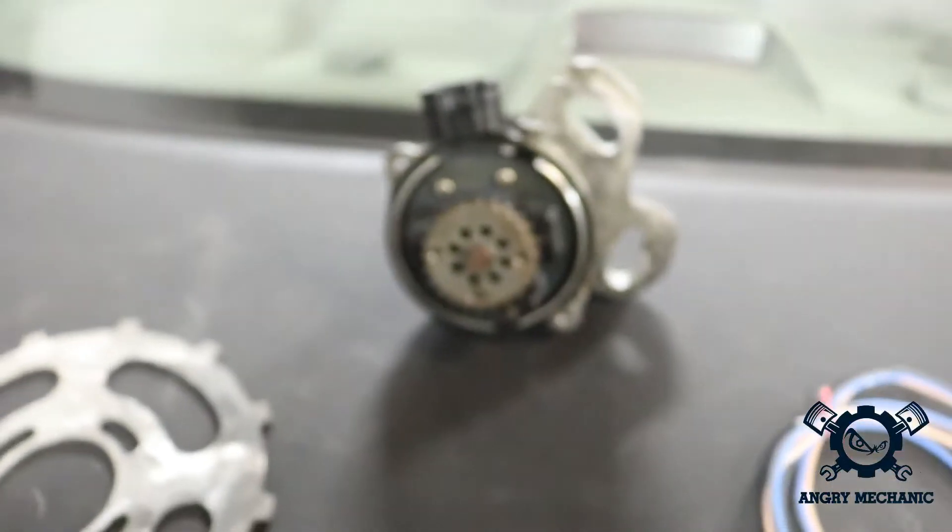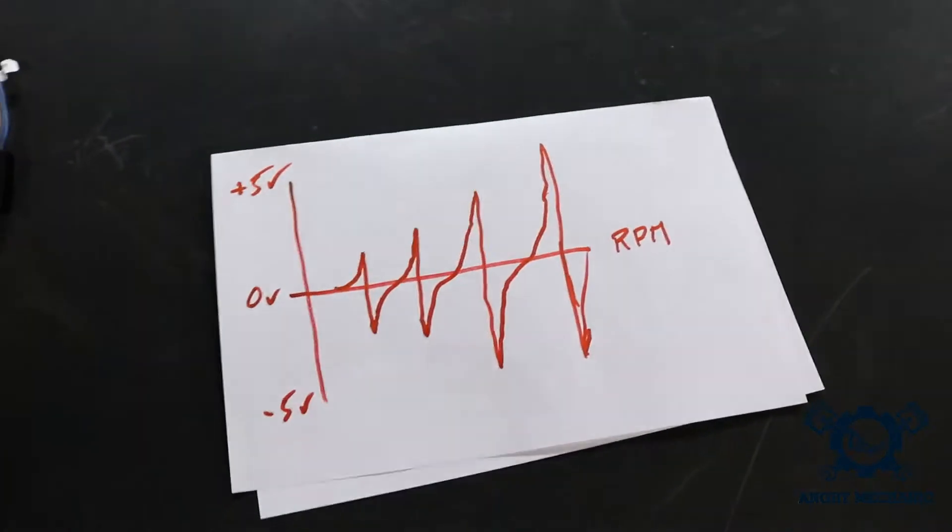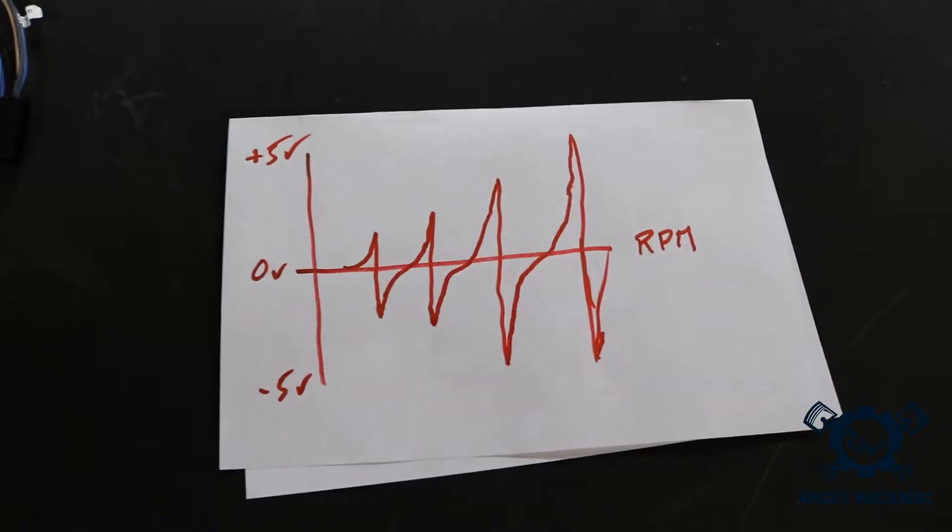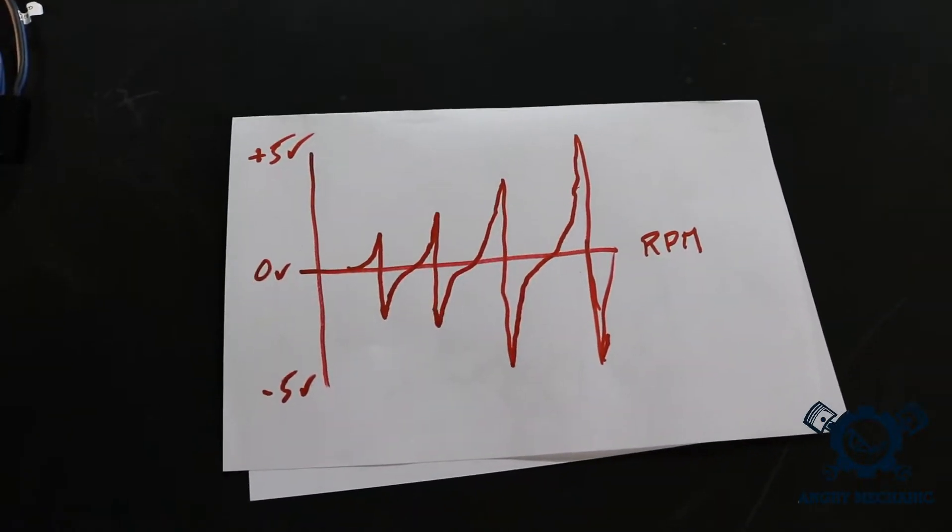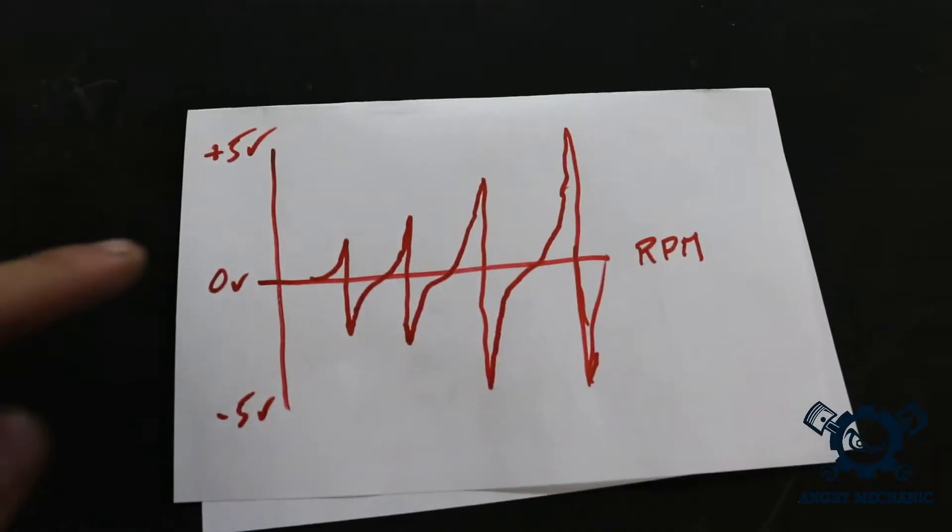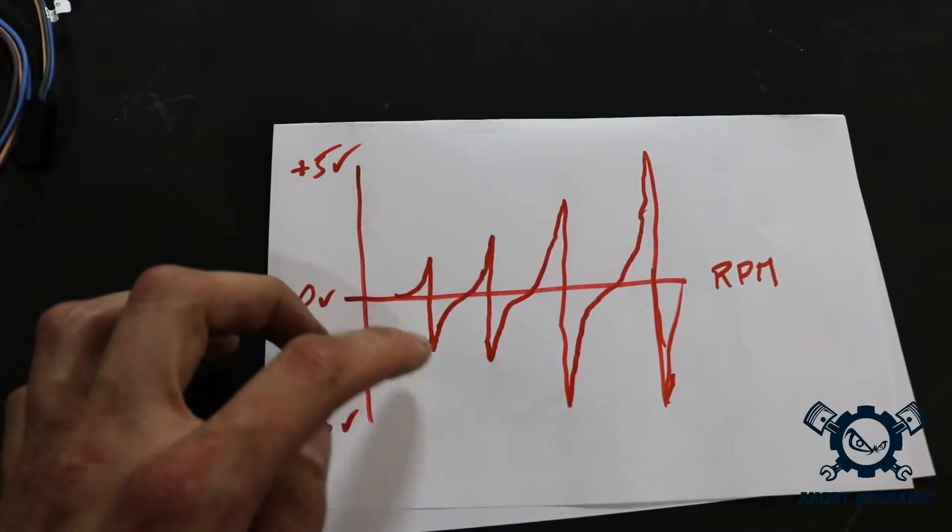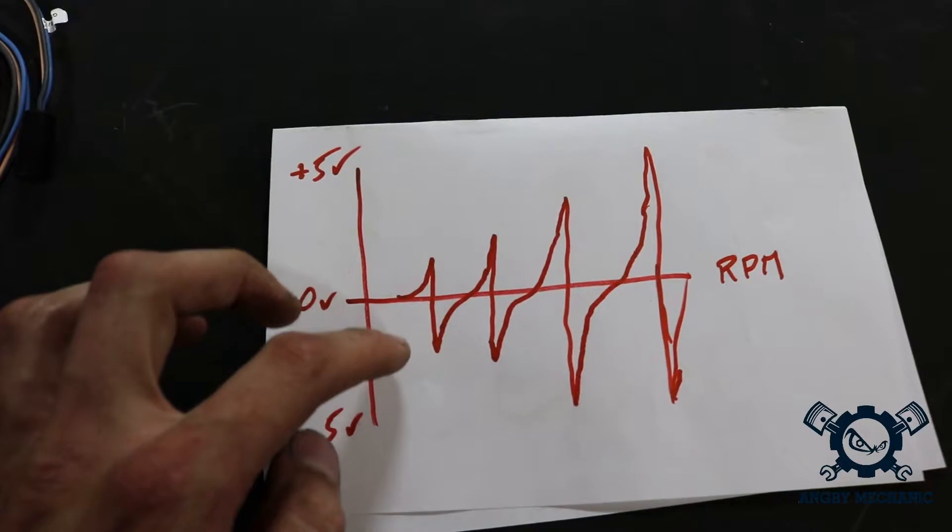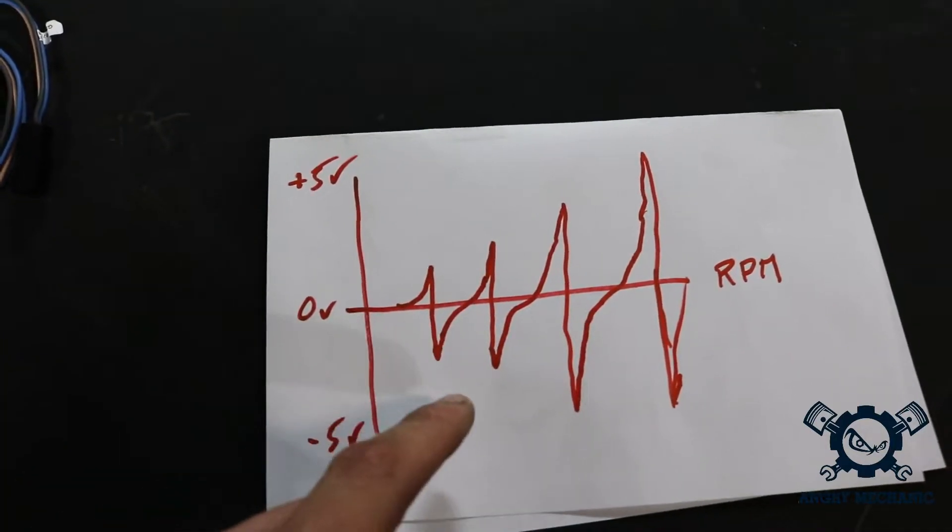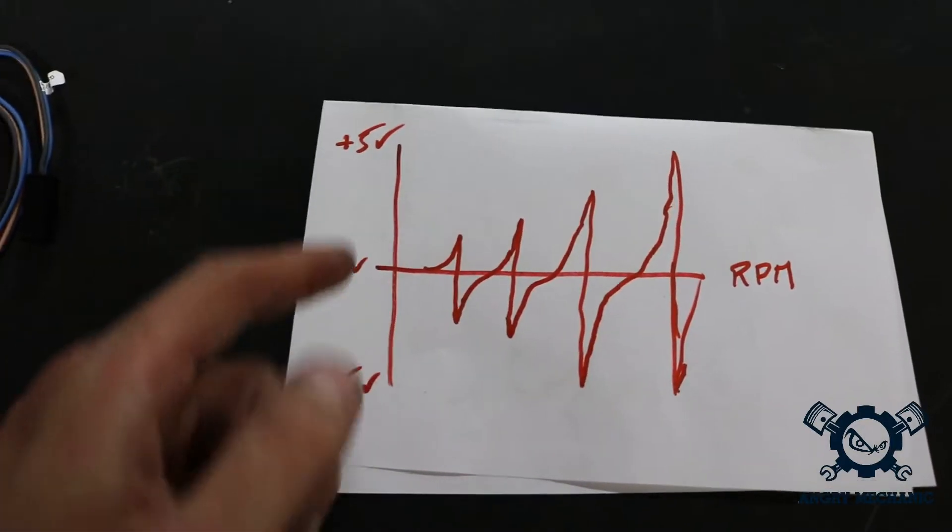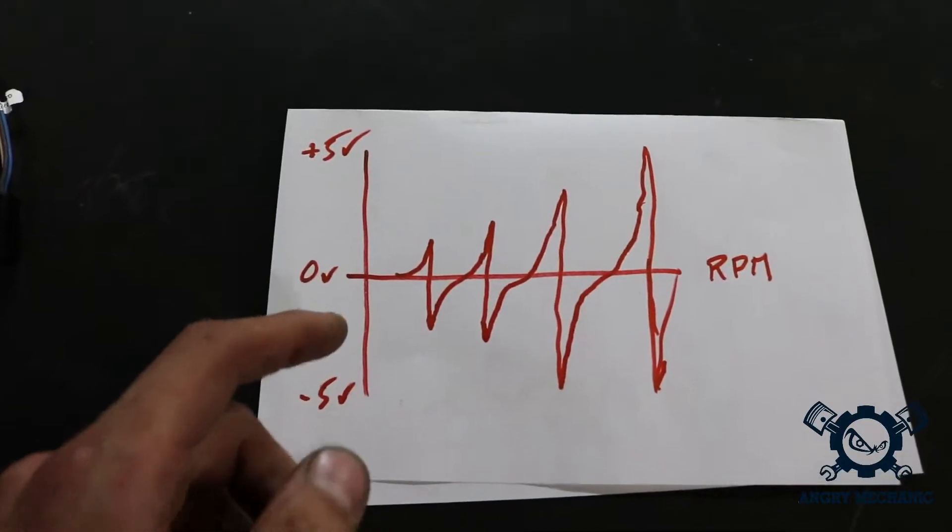So I'll just show you a little demonstration. Excuse my crappy drawing. This is a crude representation of what a sine wave looks like. So over here, this is like maybe at low RPM or cranking. This is the wave that is produced. And as the speed increases, this is not really to scale in terms of voltage or whatever, but I'll explain.